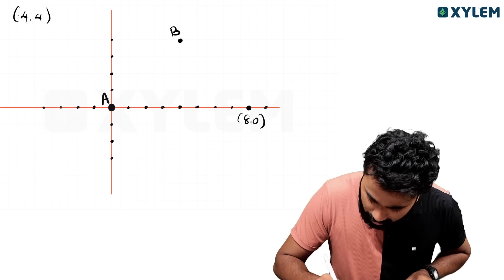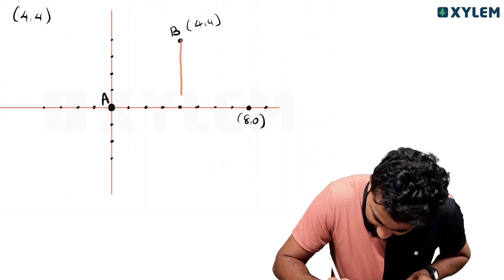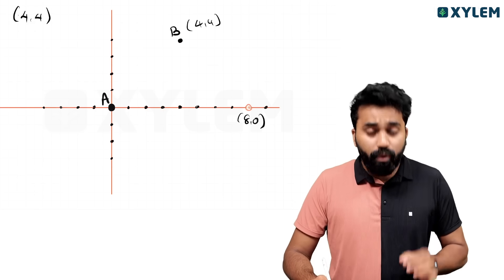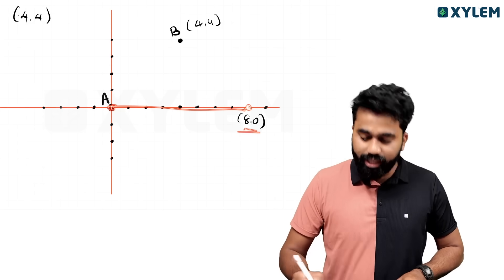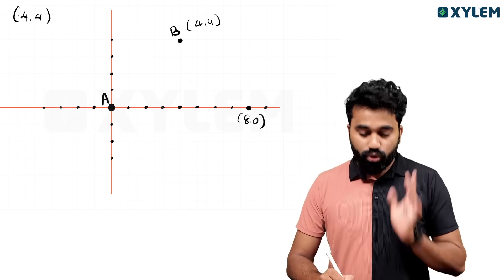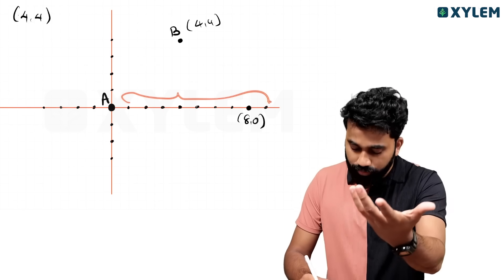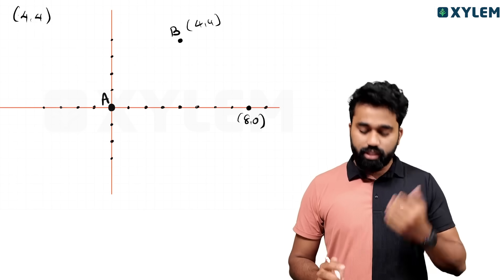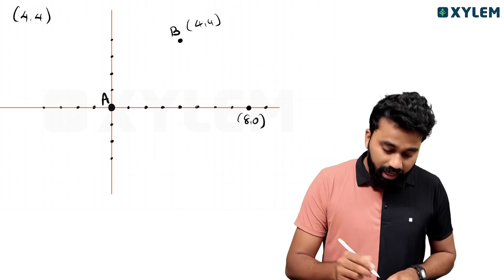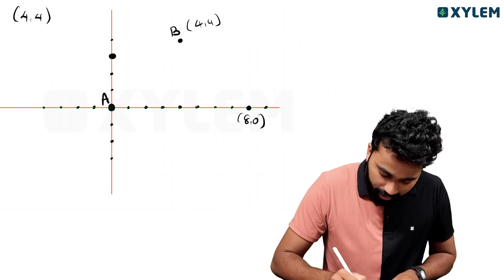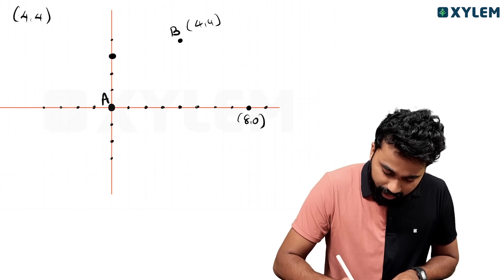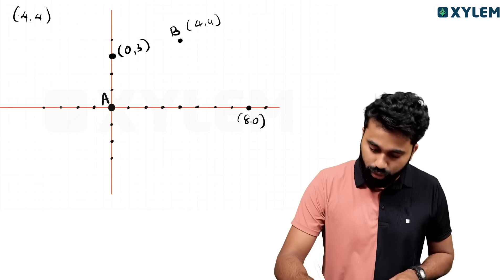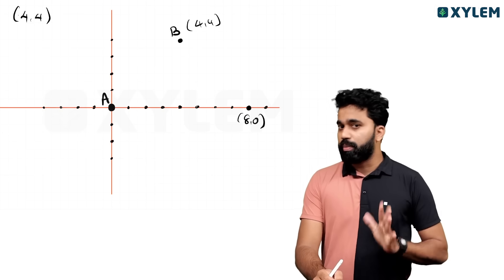You know y is 0, but (4,4) — this is 4. Any point on the x-axis has y equal to 0. Any point on the y-axis has x equal to 0. For example, the coordinate (0,3): x is 0, y is 3. Any point on the y-axis, x is equal to 0. That's important.